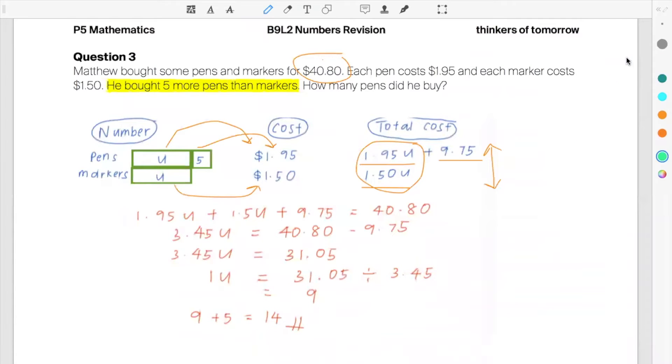Right guys, I would have used the sets approach if, let's say, I am given he bought five times as many pens as markers. Then I'll be using the sets and grouping approach to identify the first step, what is in one set, for every five pens there will be one marker. If the question were to tell us that he bought five times as many pens as markers.